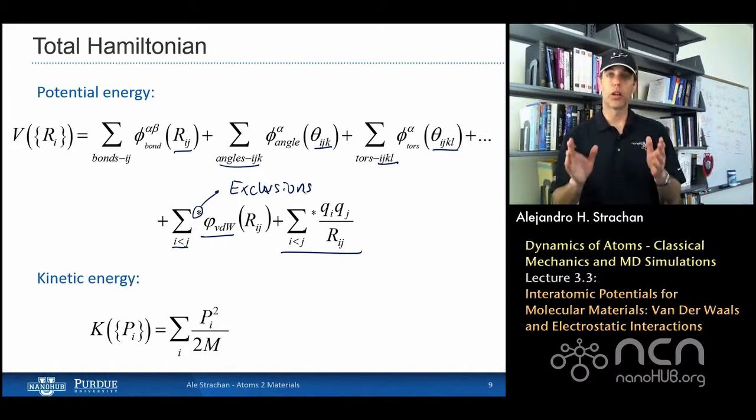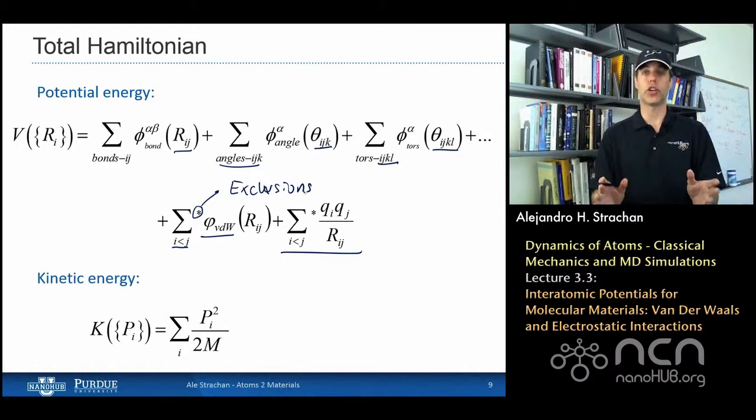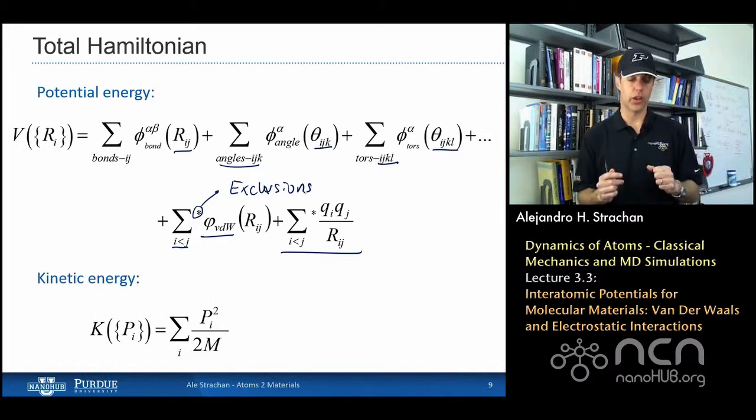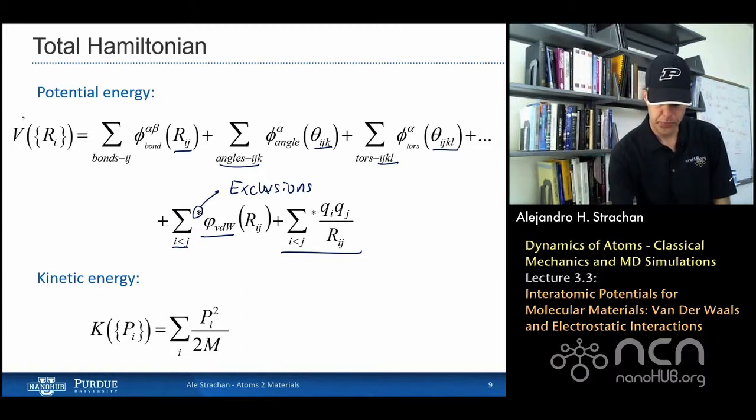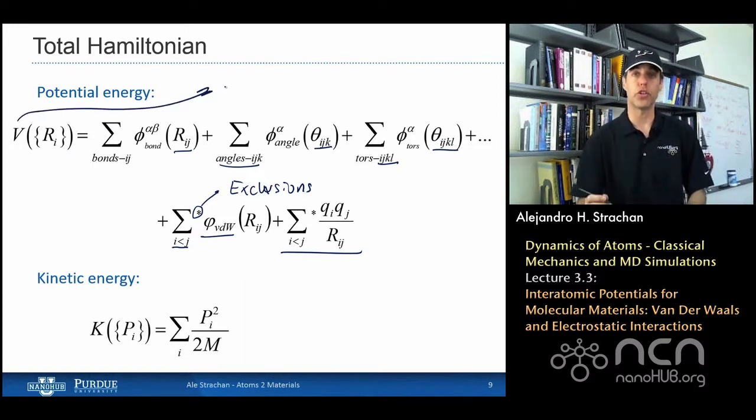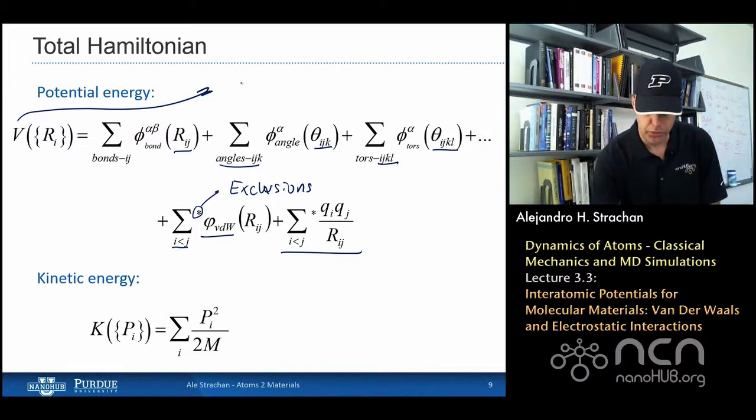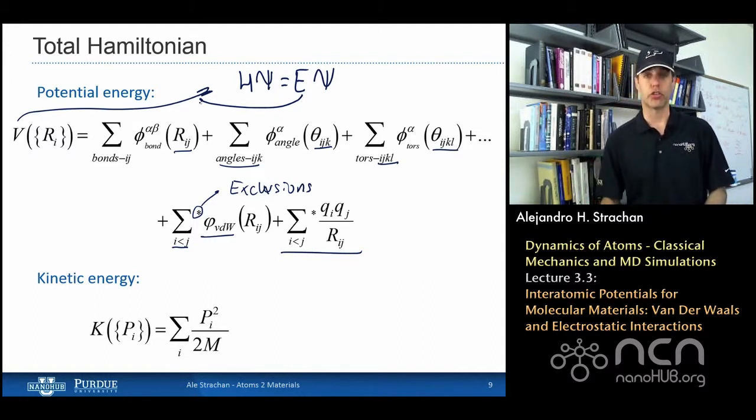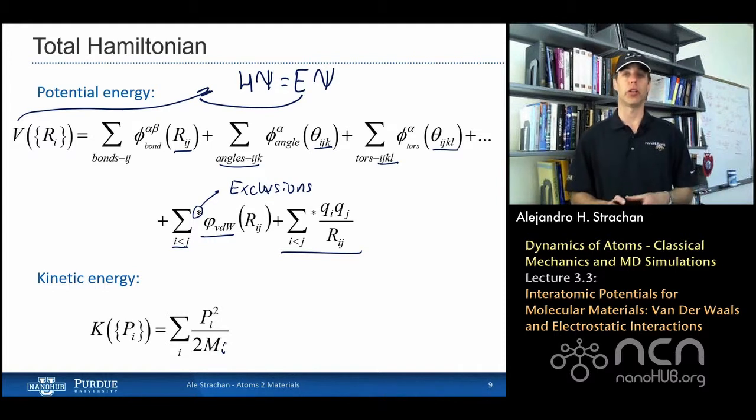There's van der Waals interactions and Coulomb interactions, and these sums run over all pairs of atoms. That's why I'm writing the sum as i less than j, and the asterisk in the sum represents these exclusions. So that's my total potential energy, and this mimics what the electrons are doing in the system. This would be, if I did an ab initio MD calculation, this would be the eigenvalue, and on top of that I have the kinetic energy of the ions, and it's p squared over 2m for every single atom in the system.